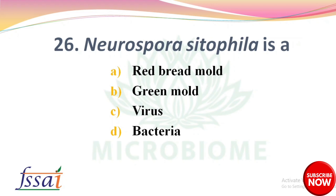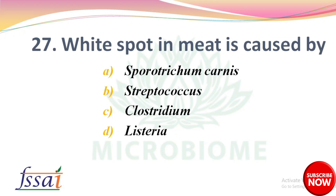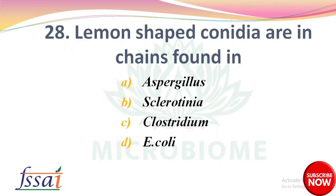Next: Neurospora sitophila is — options: red bread mold, green mold, virus, bacteria. The right answer is option A, red bread mold. Next: White spot in meat is caused by — options: Sporotrichum carnis, Streptococcus, Clostridium, Listeria. The right answer is option A, Sporotrichum carnis.